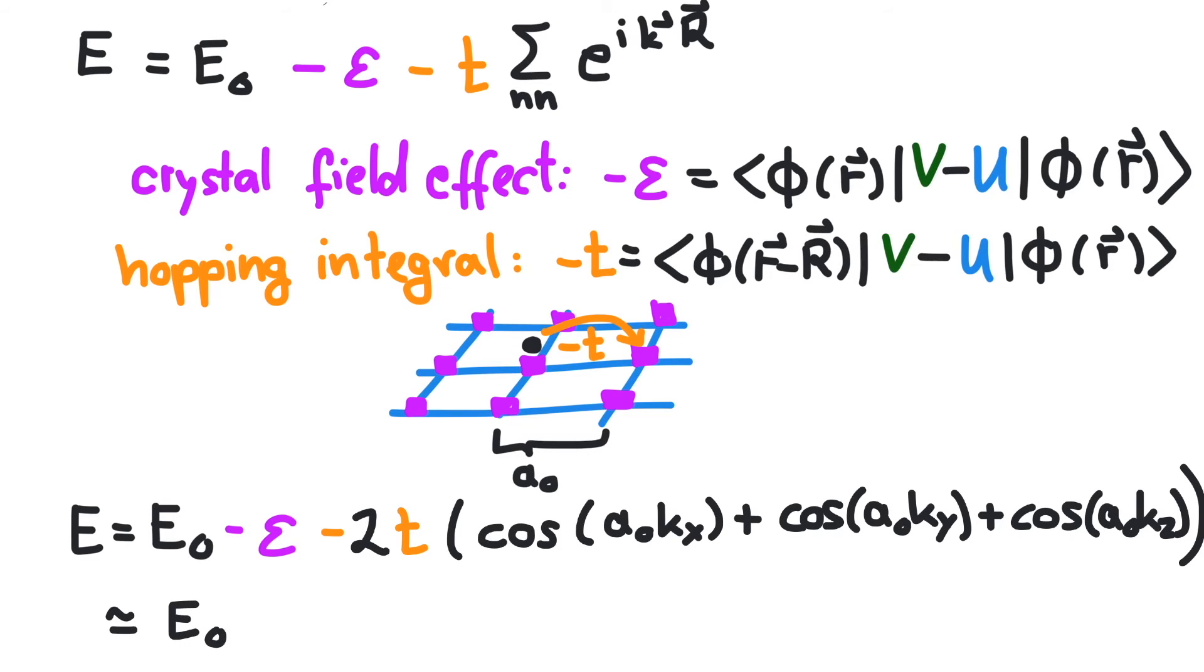Note that in case of small momenta, the cosine can be expanded in the Taylor series. We yield the same functional dependency as for free electrons or in a Fermi gas.